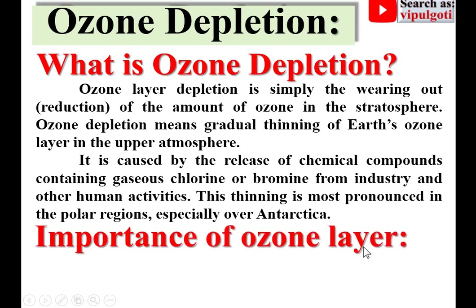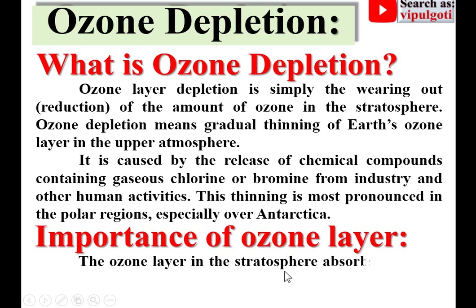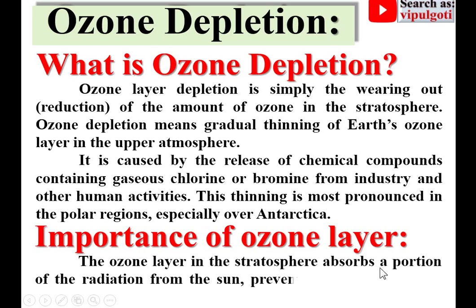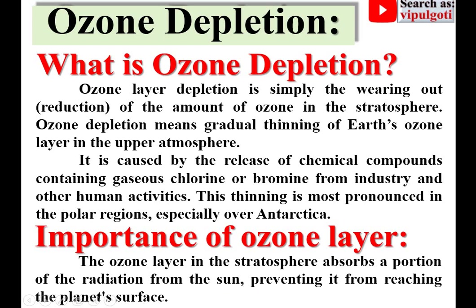The ozone layer in the stratosphere absorbs a portion of the radiation from the sun, preventing it from reaching the planet's surface. That means it prevents solar radiation from reaching Earth's surface.